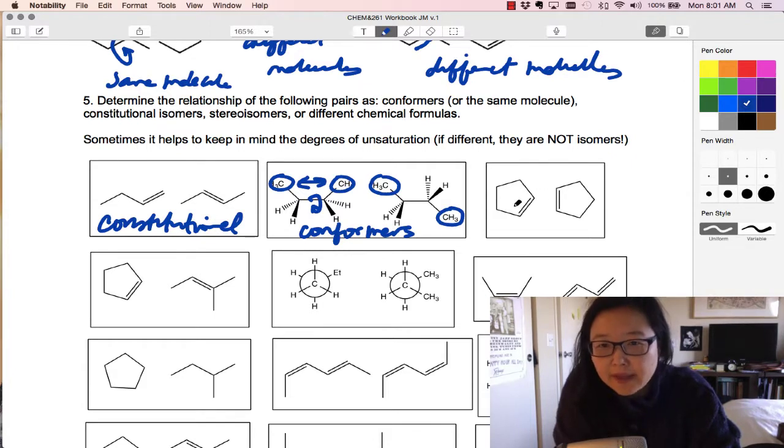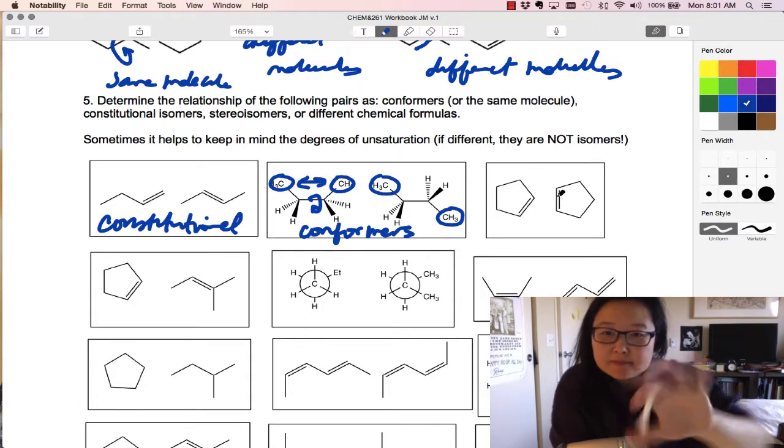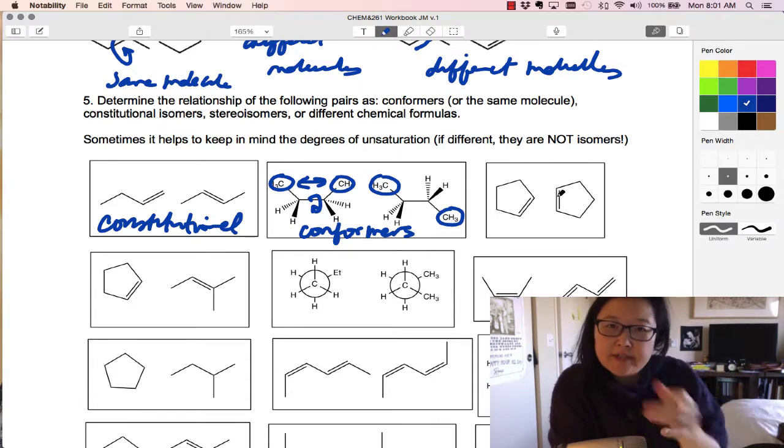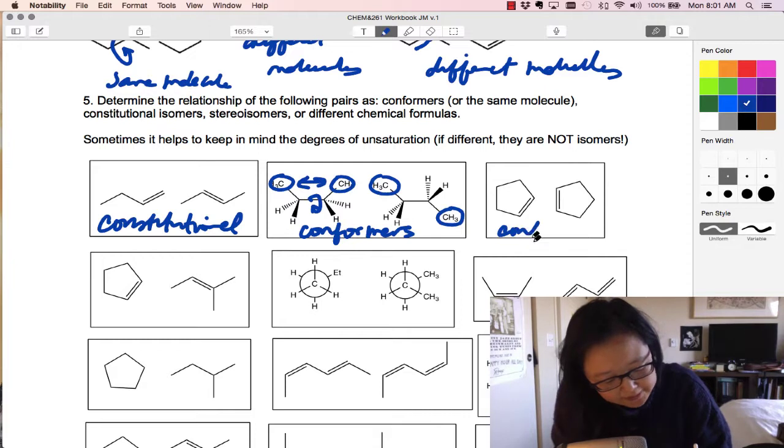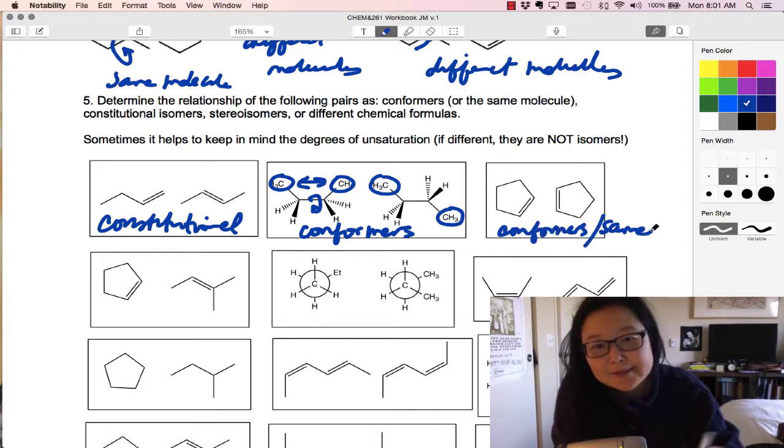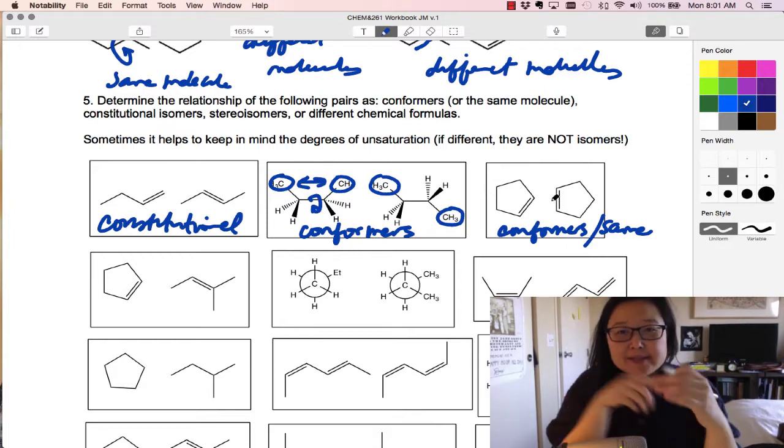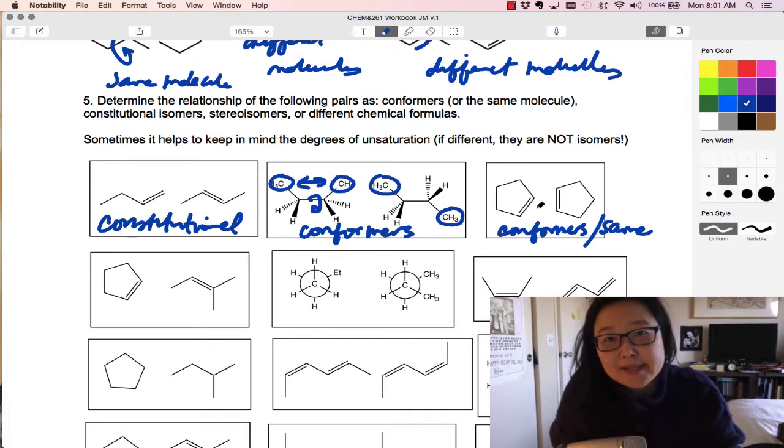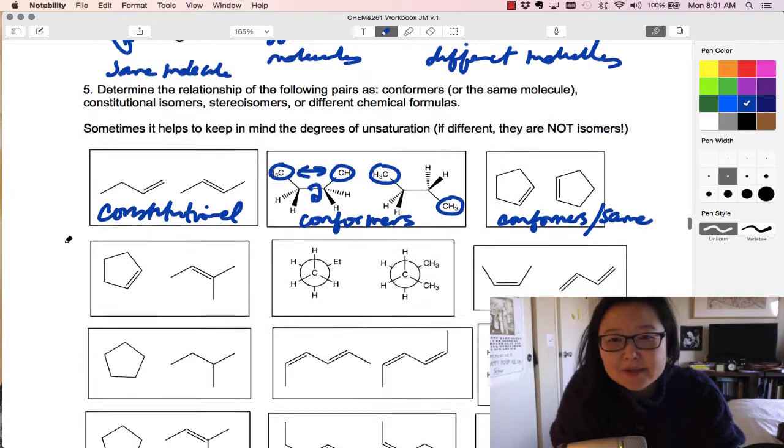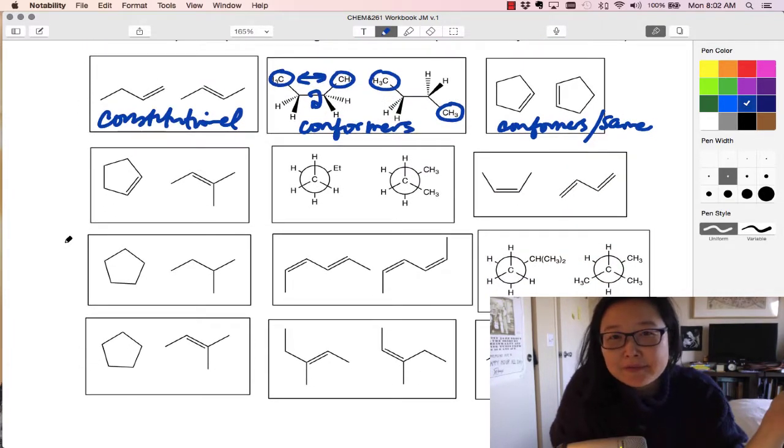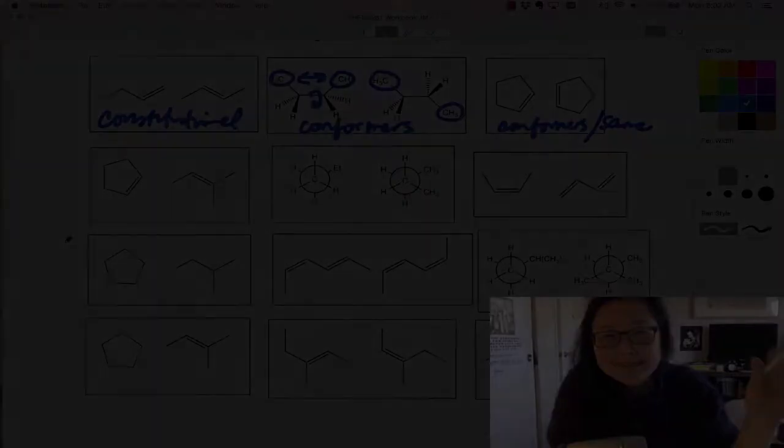For this pair here, we have the same connectivity, just rotation of that molecule. So this is conformers. Or you can just say they're the same molecule. We actually can't see the conformation, which is the rotation of the bonds. We can't really see that with this kind of drawing, but we can with this kind of drawing. Okay, so go through these, and we'll go through them together in a few minutes. But try these on your own, see if you can figure it out.